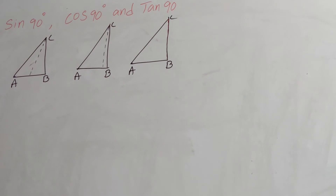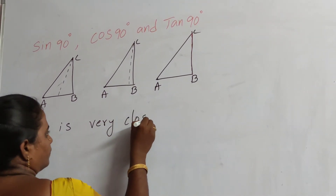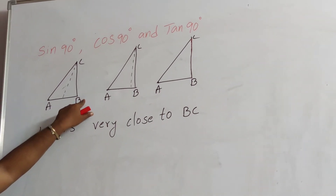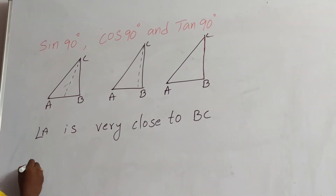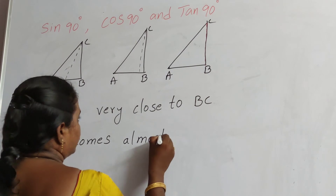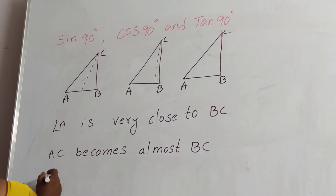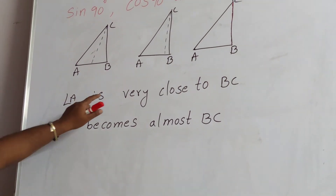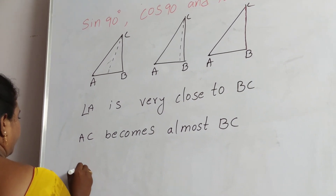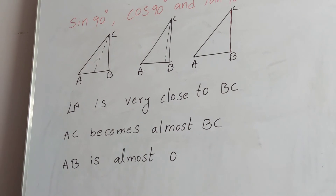In the right-angled triangle, when angle A is very close to 90 degrees, side AC becomes almost the same as BC. Then AB becomes almost 0.